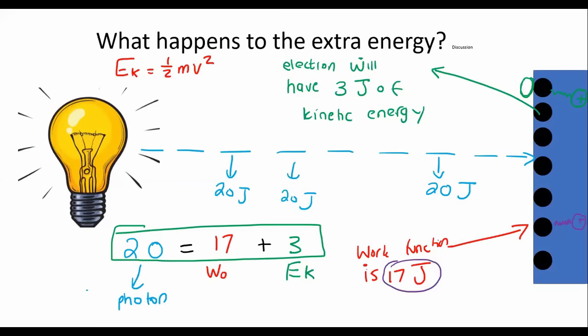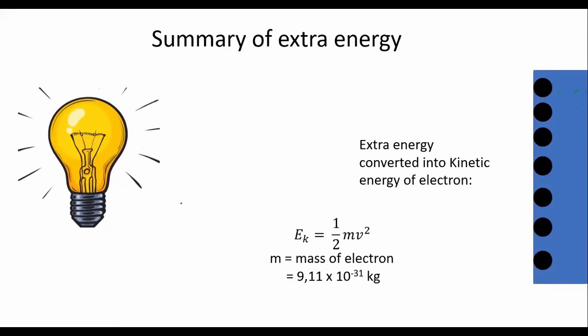Now remember that we are talking about electrons. And so we need to know what the mass of an electron is. Now that is a constant number given to you on the formula sheet, in that little table, as 9.11 times 10 to the minus 31. That is a constant that will be given to you. So we said that all the extra energy is going to be converted into the kinetic energy of the electron. We said that kinetic energy has this formula, where m is the mass of an electron, with the following constant.